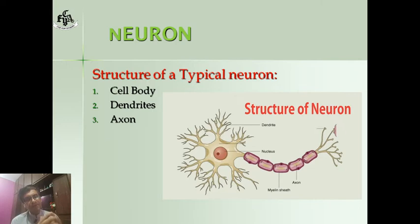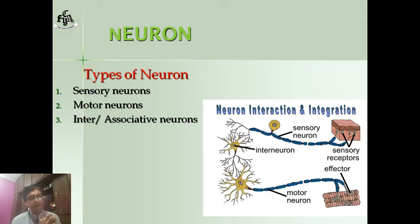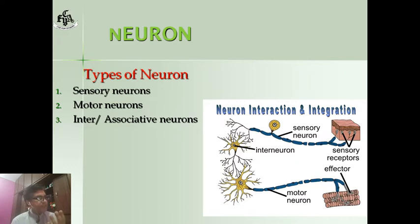Now let us discuss the different types of neurons. Neurons are basically divided into three types: sensory neuron, motor neuron, and inter or associative neuron.